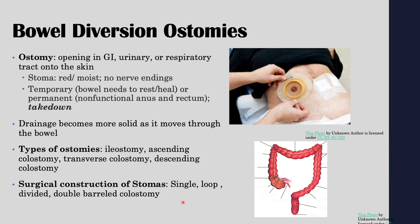There are different types of surgical constructions of stomas. You can have a single stoma, where just one end of the intestine is pulled out to the surface — usually permanent. You can also have loop, divided, and double-barreled constructions.